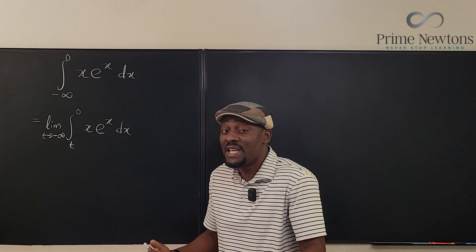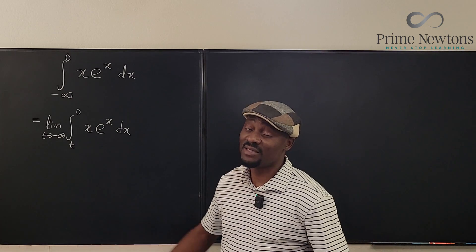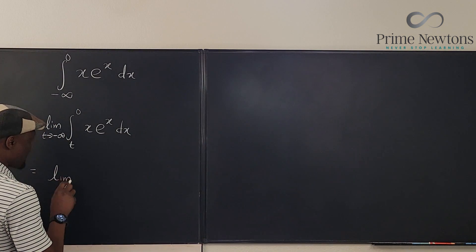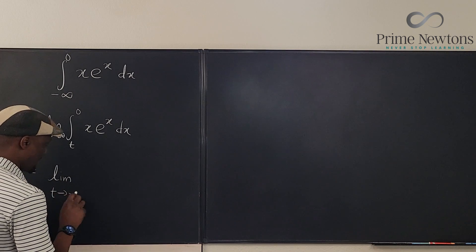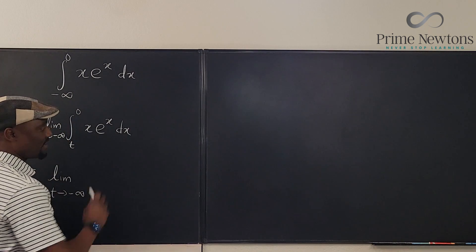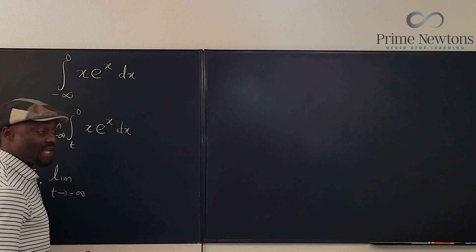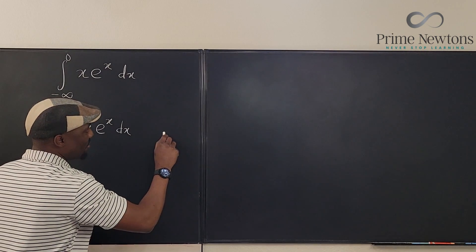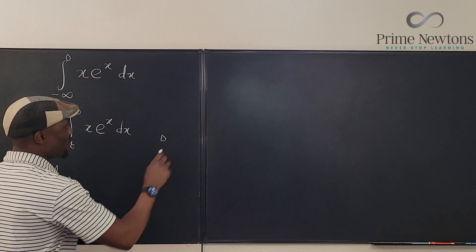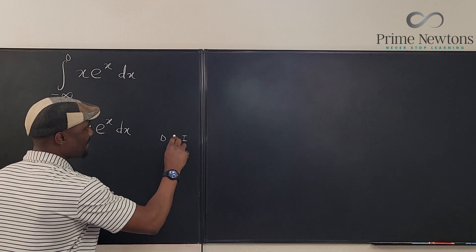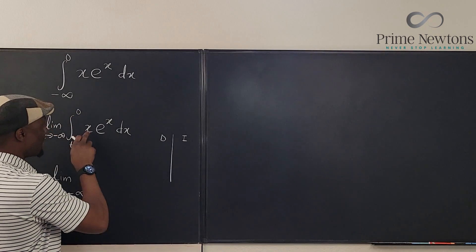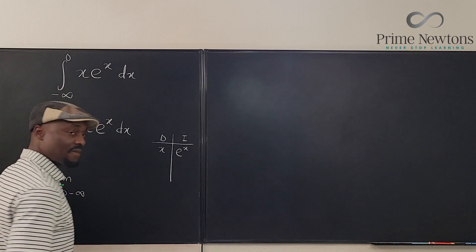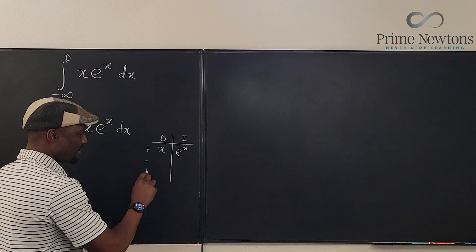I'm going to use the DI method because it makes things a lot faster. This is equal to the limit as t goes to negative infinity of this integral. Using the DI table, I'm going to differentiate x and integrate eˣ, with signs plus, minus, plus.